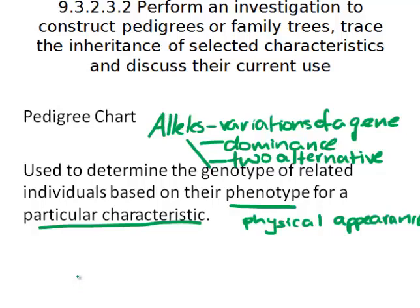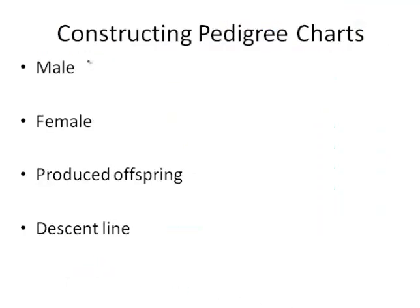We also hope to work out the genotypes of individuals based on looking at that physical feature. Before we get started looking at pedigrees, we're going to look at some internationally recognizable symbols that help us determine the sex of individuals, if they carry the trait, and how each of the individuals are related.